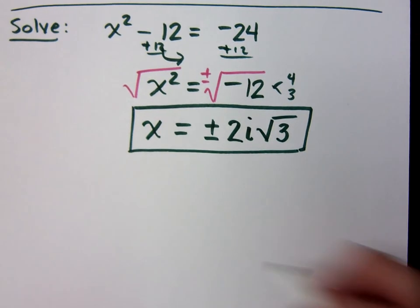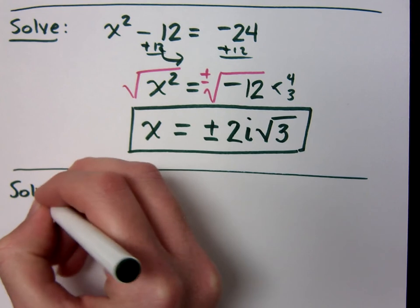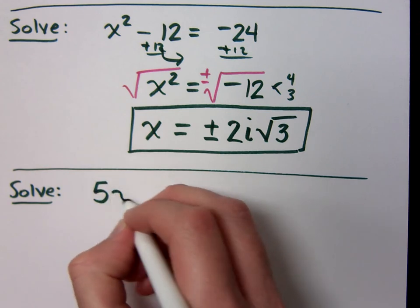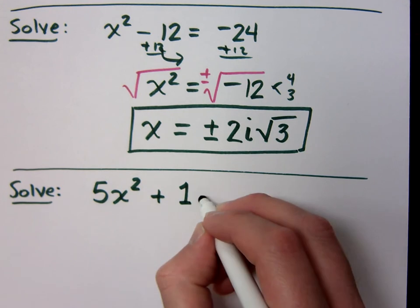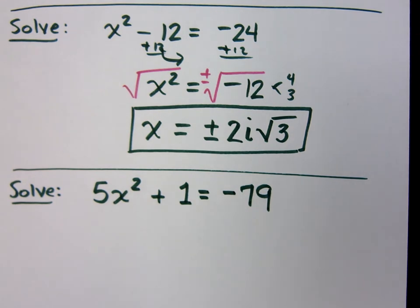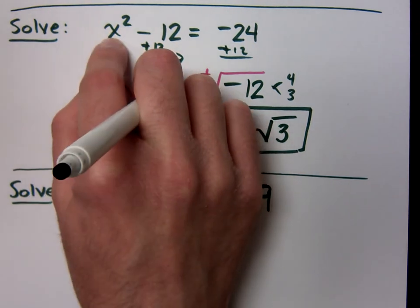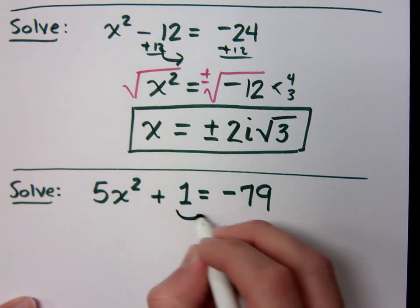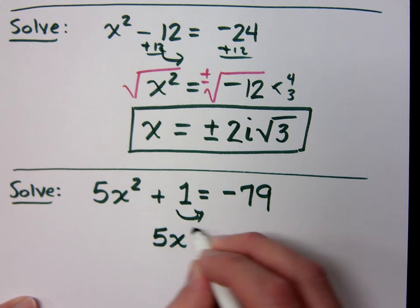So, plus or minus 2i square root of 3. Is everybody all right with that? All right. We've got room for one more here. Let's not, though. 5x squared plus 1 equals negative 79. How am I going to do this one? What did I do in the last problem? You moved the 12 over, but the reason you did that is because you wanted the square by itself, right? So you just want to find 1. Well, right now, my job is to get the square by itself. What's the first thing I'll do to get the square by itself? Move the 1. So what does 5x squared equal? Negative 80.